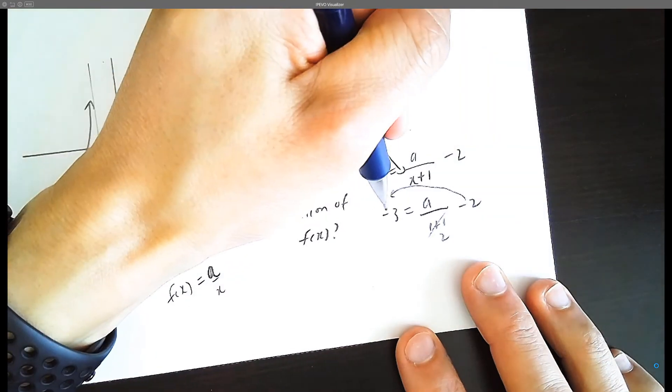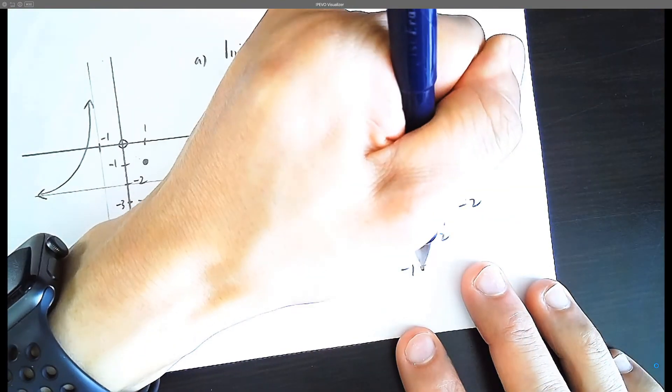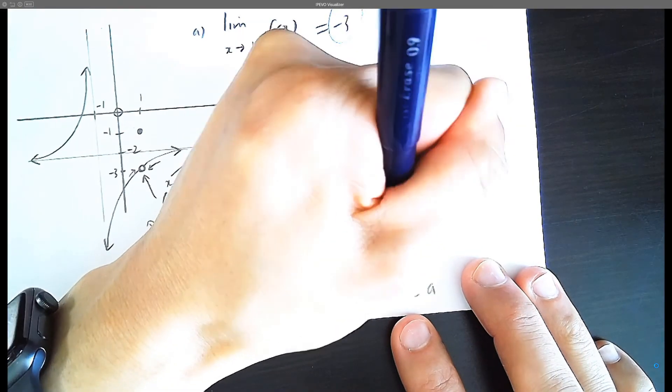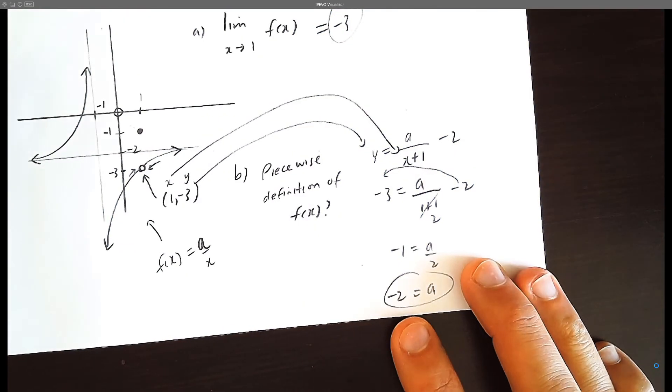We're going to throw the 2 over, so negative 3 plus 2 is going to be negative 1. We're going to multiply both sides by 2. So now we have it, we have the actual a value.